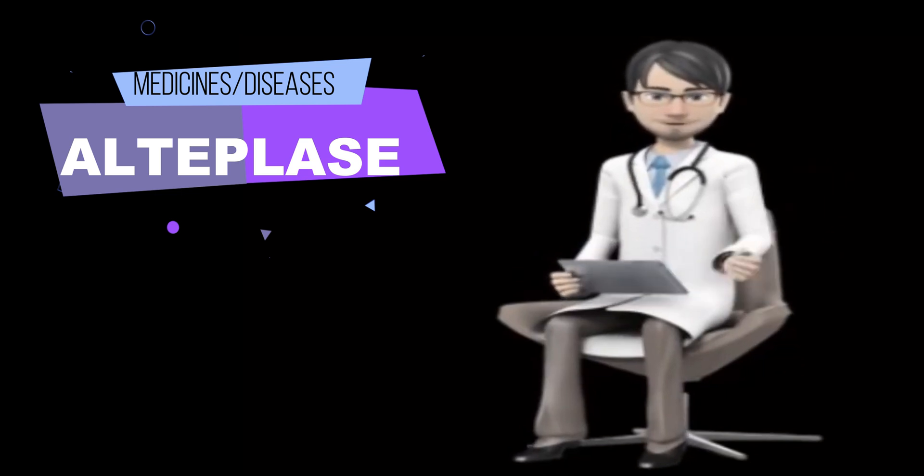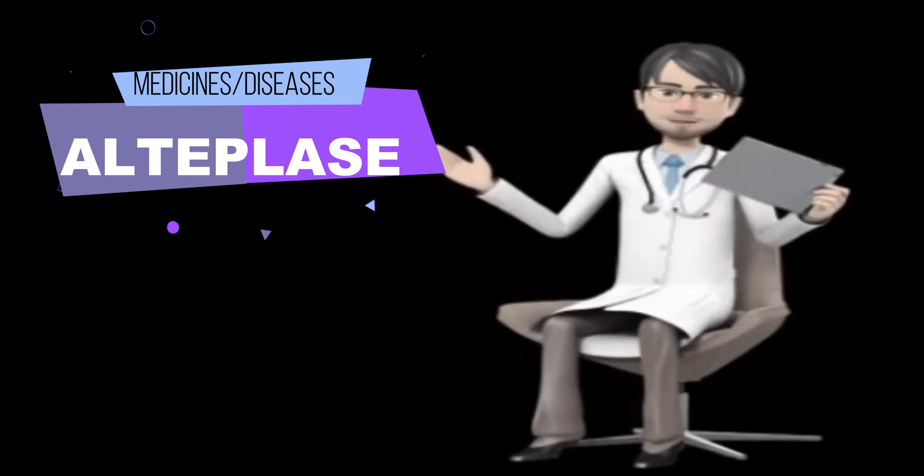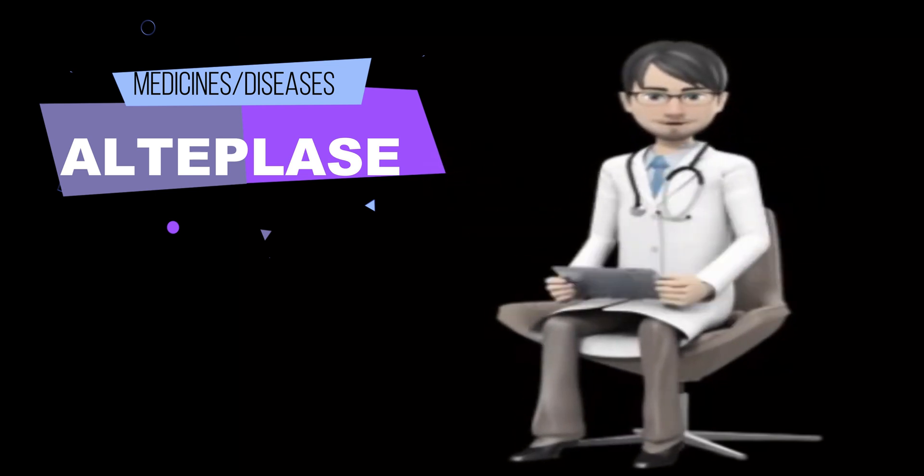How is Alteplase given? Alteplase is given as an infusion into a vein. A healthcare provider will give you this injection. Alteplase is usually given within 3 hours after the first signs of stroke or heart attack symptoms.